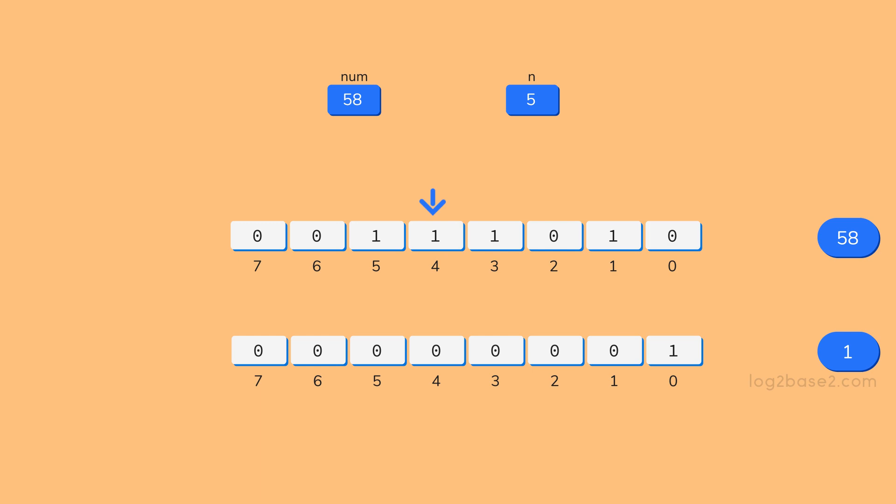So how can we do that? From our previous videos, we know how to create a bit mask with the nth bit alone set to 1 with the remaining bits set to 0. We need to do 1 left shift n minus 1, right?